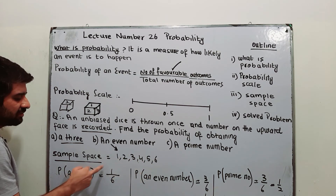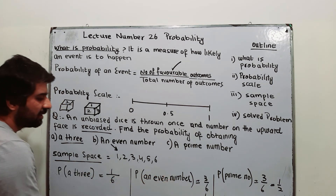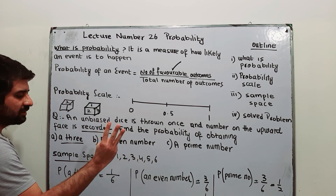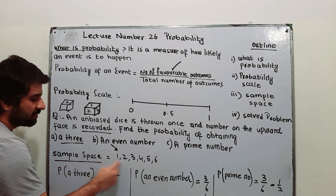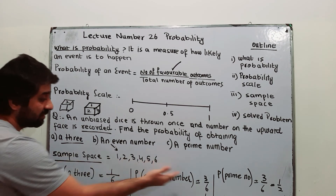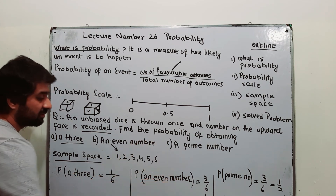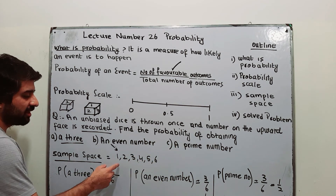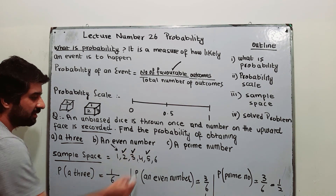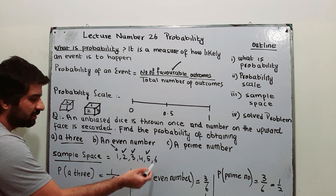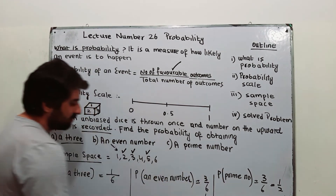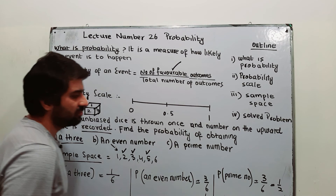The total outcomes from one to six are six, so probability of getting a three is one over six. Probability of an even number: the even numbers in the sample space are two, four, and six — we have three even numbers divided by total outcomes six, so three over six equals one half. Probability of a prime number: the prime numbers are two, three, and five — three prime numbers out of six total outcomes, so three over six equals one half.